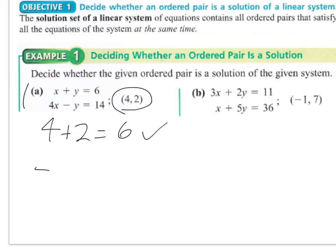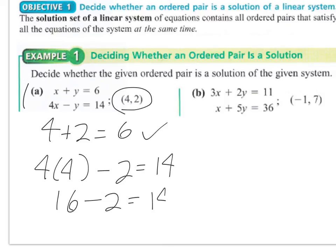If I try that also in the second equation, 4x minus y equals 14, if I do just a little bit of work, I get 16 minus 2, which equals 14, so yes. The ordered pair does solve both equations, so that is the definition of a solution to a system.